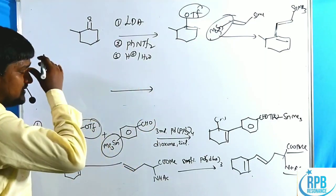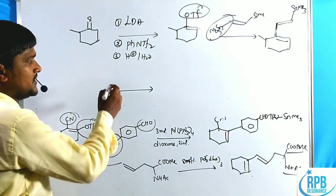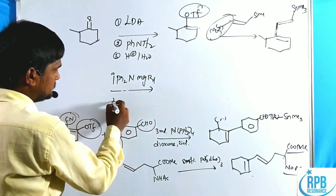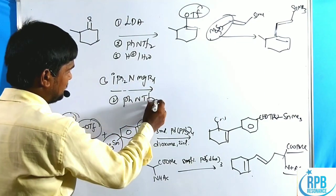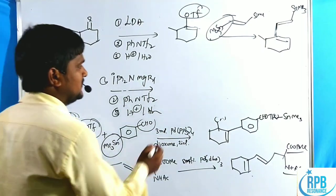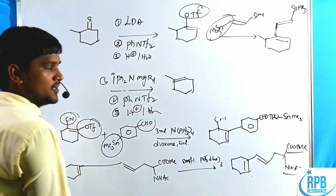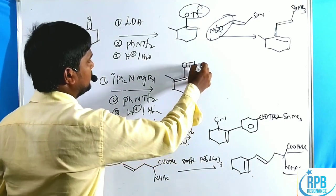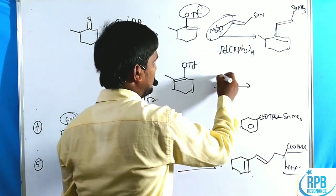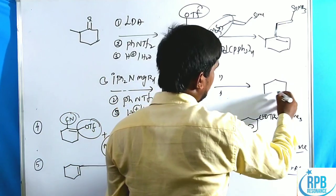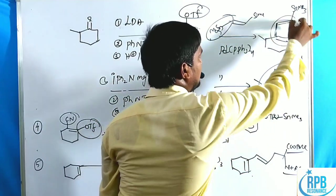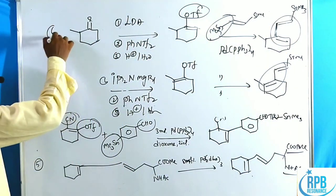By changing LDA to diisopropyl amine with N-MgBr, and using the same NTf₂ and H₂O/H⁺ steps, proton abstraction now occurs from the sterically more crowded side, giving the O-triflate intermediate. Using the same palladium complex and stannous reagents, we obtain trans-dienes as the major product. These are the sixth and seventh examples — cis-diene versus trans-diene formation from carbonyl compounds using Stille coupling.